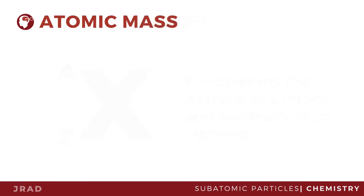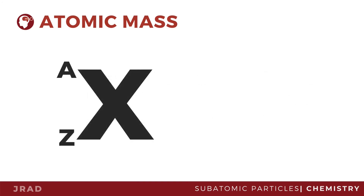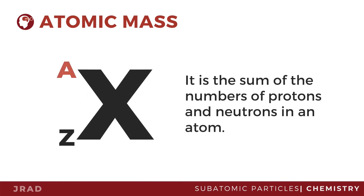The mass of an atom is based on the weight of the protons and neutrons in the nucleus. Therefore, the sum of the numbers of protons and neutrons in a given atom gives the mass number. We use uppercase A as the symbol for atomic mass.